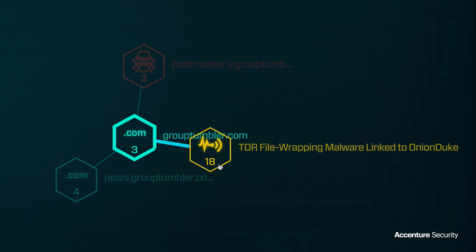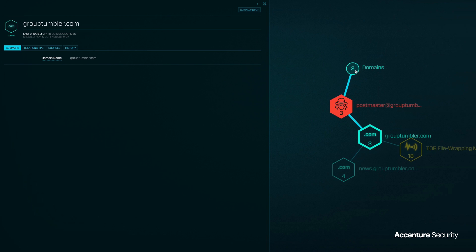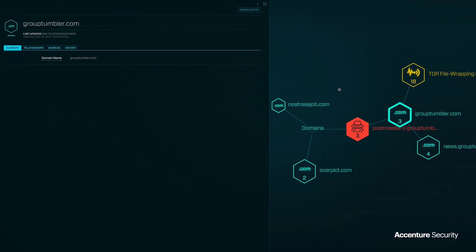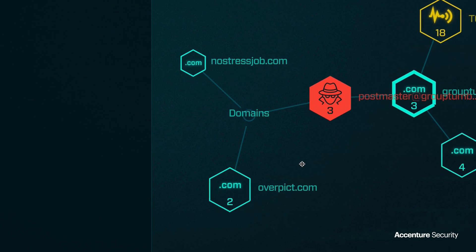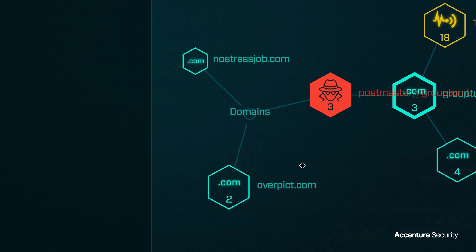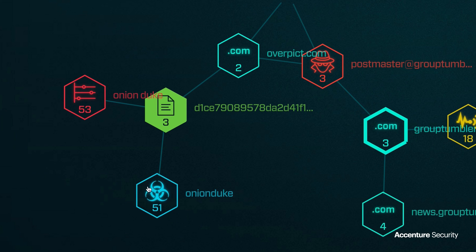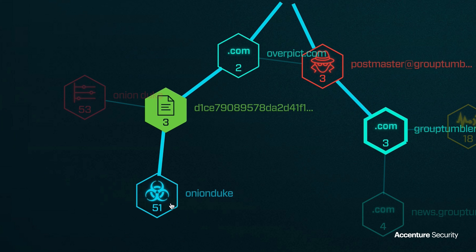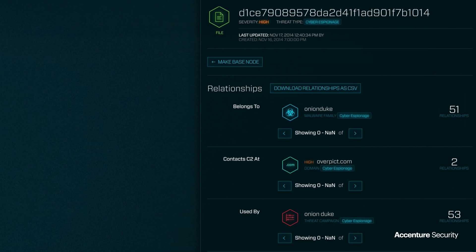There are also multiple intelligence alerts for Tor file-wrapping malware linked to the OnionDuke and MiniDuke threat campaigns. The domain registrant, postmaster at grouptumblr.com, also registered the domains nostressjob.com and overpicked.com. The domain overpicked.com was used as part of the OnionDuke threat campaign. The OnionDuke malware analysis provides detection signatures to identify various attack phases and a list of indicators that can be entered into a SIEM.